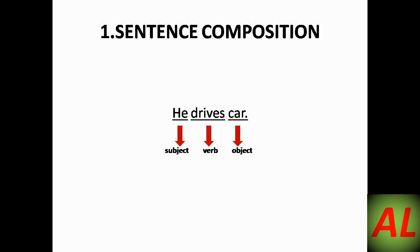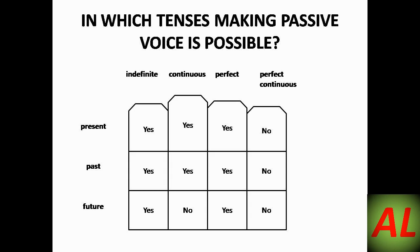This will help us better understand active and passive voice later. Now let's look at which tenses allow passive voice sentences. There are actually 12 tenses, and you can remember them on your fingers. One can make passive voice sentences in all tenses except present perfect continuous, past perfect continuous, future perfect continuous, and future continuous tense.